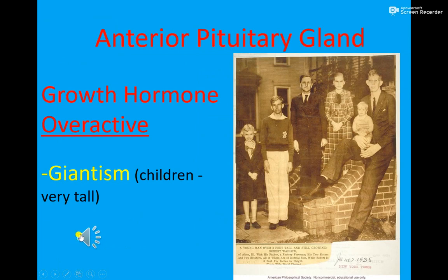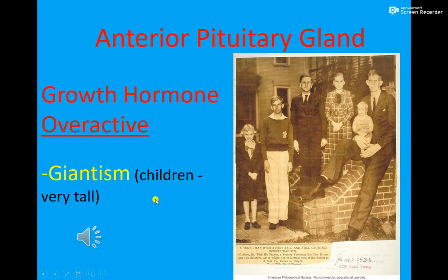The disorders of the anterior pituitary include excess secretion of growth hormone, also known as somatotrophin. If growth hormone is secreted in excess during childhood, it causes abnormal growth of the limb bones and produces gigantism in children, making them very tall during adult age. Examples include Alam Channa and Nasir Somro.